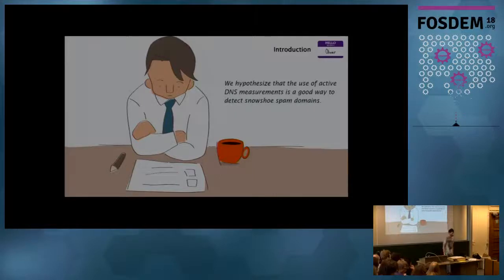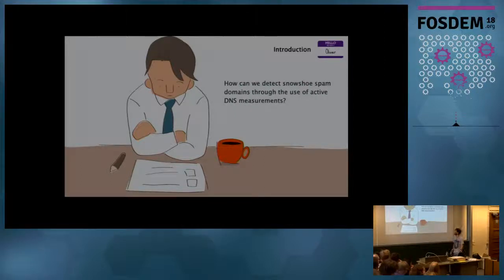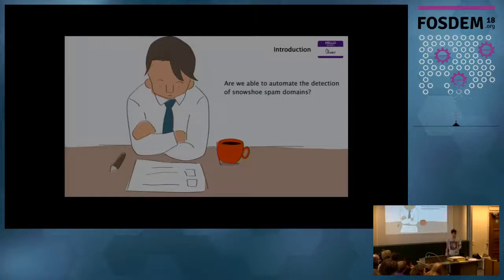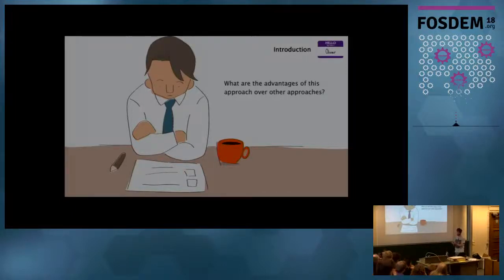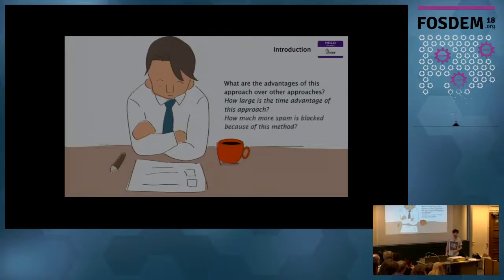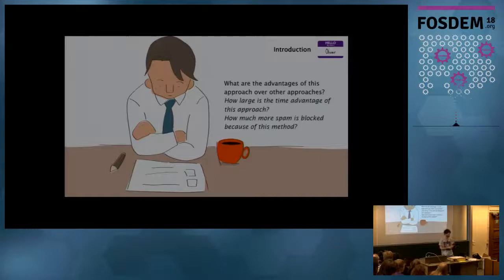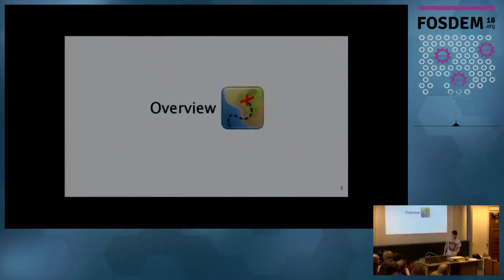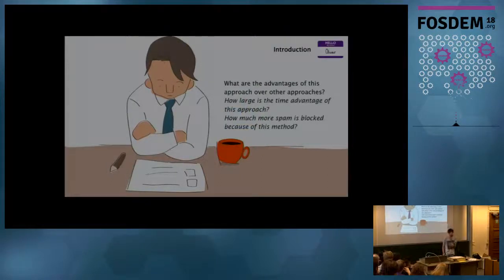Since this was academic research, there had to be a research question. Our main research question was based on the hypothesis that the use of active DNS measurement is a good way to detect snowshoe spam domains. To validate this hypothesis, we've come up with the following research questions: First, how can we detect snowshoe spam domains through the use of active DNS measurements? Secondly, how can we automate the process? And thirdly, what are the advantages of this approach over other approaches? We quantify this in two ways: how large is the time advantage that we can gain, and how much more spam can we block because of this?